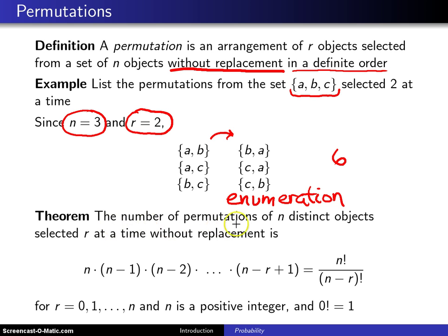The theorem states the number of permutations of n distinct objects selected r at a time without replacement is—and you can either write it out in this fashion or you can write it out in terms of factorials—for r equals zero through n, and n is a positive integer and zero factorial equals one.